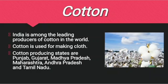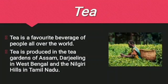Cotton is among the leading producers in the world. It is used for making clothes and is grown in states like Punjab, Gujarat, Madhya Pradesh, etc. Tea is a favorite beverage of people all over the world. It is produced in the tea gardens of Assam, Darjeeling in West Bengal, and the Nilgiri Hills in Tamil Nadu.